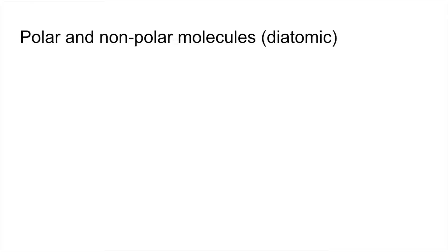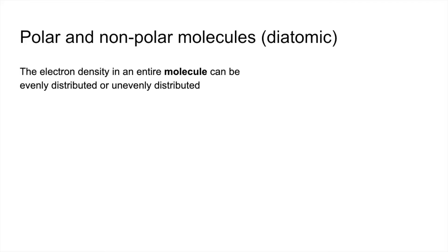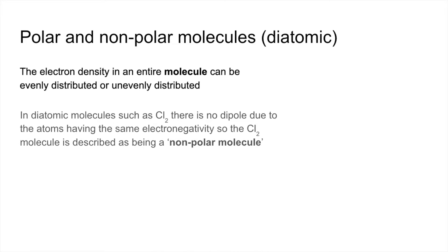Moving on to molecules, we'll start with diatomic molecules. The electron density in an entire molecule can be evenly or unevenly distributed. In diatomic molecules like chlorine, Cl2, there's no dipole because the atoms have the same electronegativity, so the Cl2 molecule is described as being a non-polar molecule.